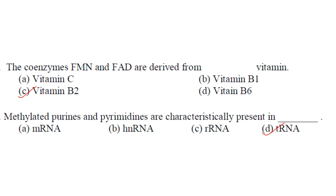Methylated purines and pyrimidines are characteristically present in tRNA. Methylated purines and pyrimidines are characteristic features of tRNA.